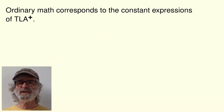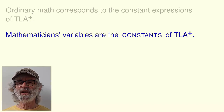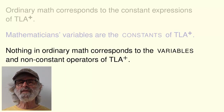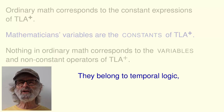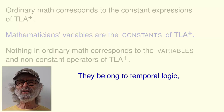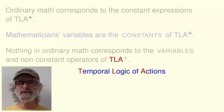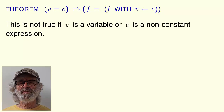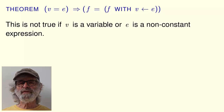Ordinary math corresponds to the constant expressions of TLA+. Mathematicians' variables are the declared constants of TLA+. Nothing in ordinary math corresponds to the declared variables and non-constant operators of TLA+. They belong to temporal logic, a special kind of math that's not as simple as ordinary math. TLA stands for the temporal logic of actions. The simple substitution law is not true if v is a variable or e is a non-constant expression.